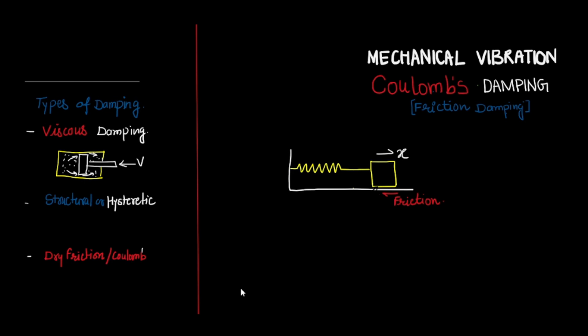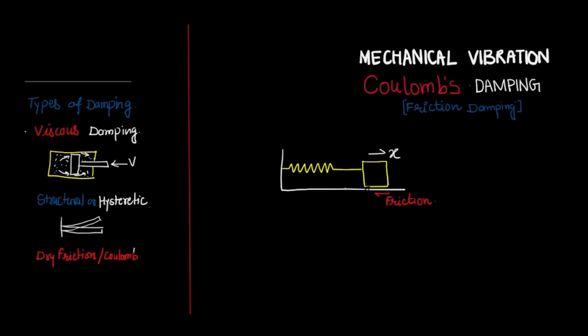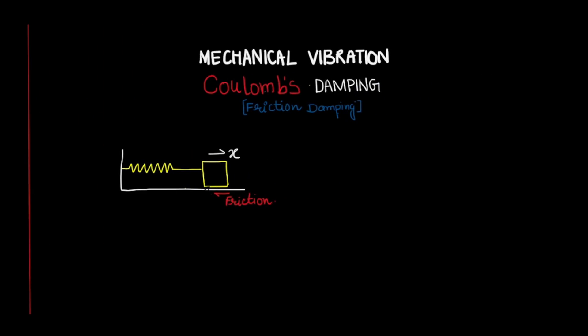Another type of damping occurs because of hysteretic loss. If we have a cantilever beam that vibrates, because of intermolecular friction there will be some dissipation of energy — this is known as hysteretic damping. The third type is dry friction or Coulomb damping, which we cover today. Whenever there is contact between dry surfaces and relative motion, energy is dissipated due to friction, and we call this mechanism friction damping or Coulomb damping.